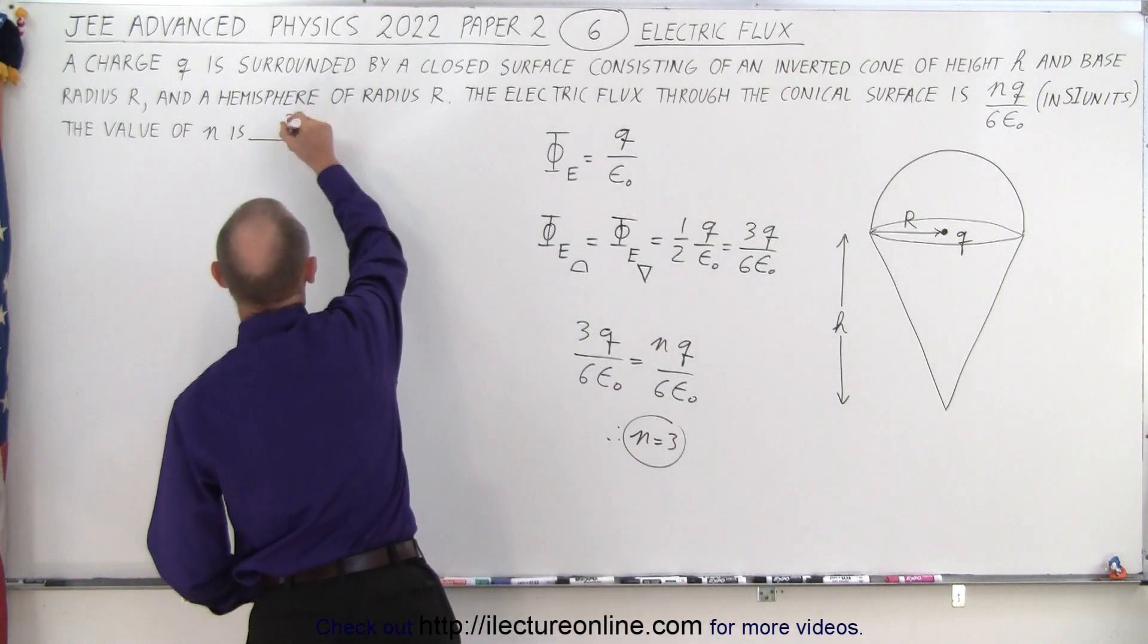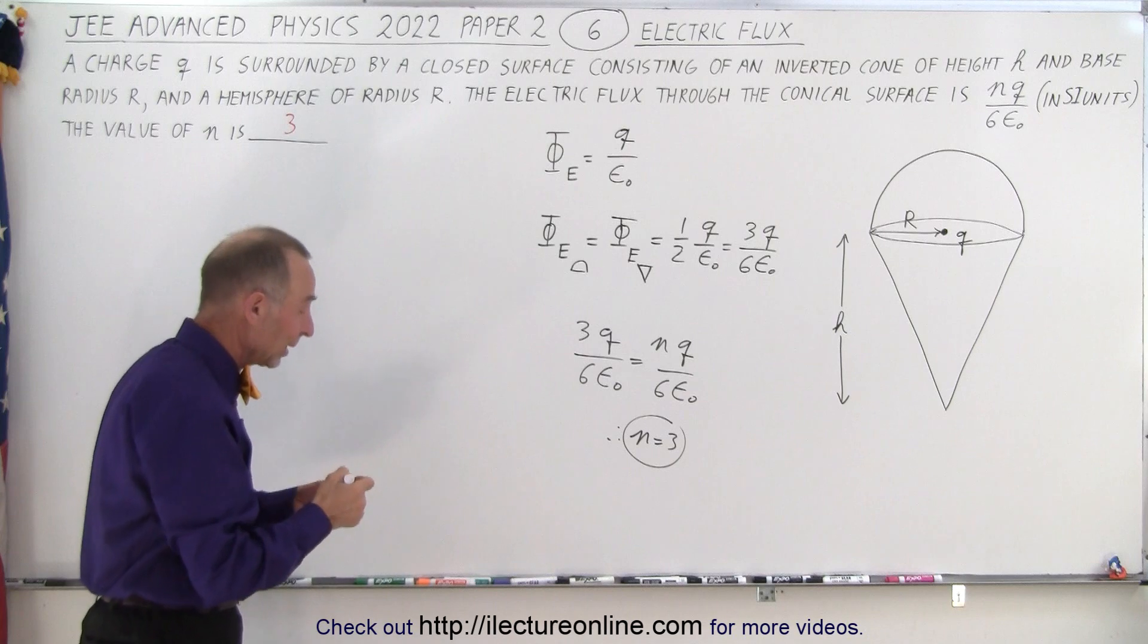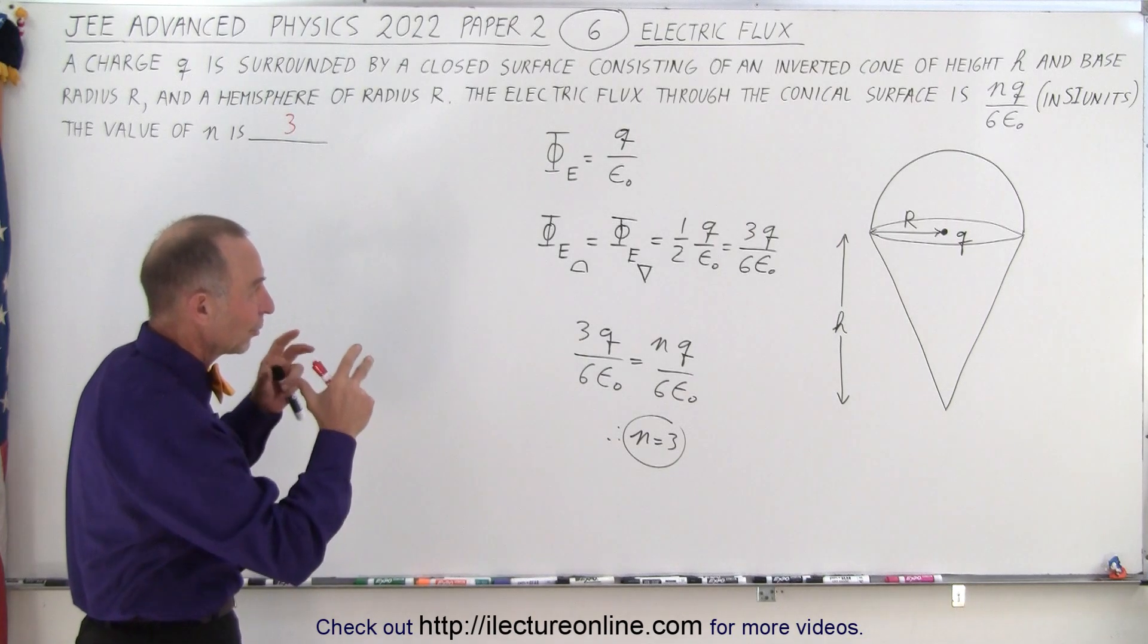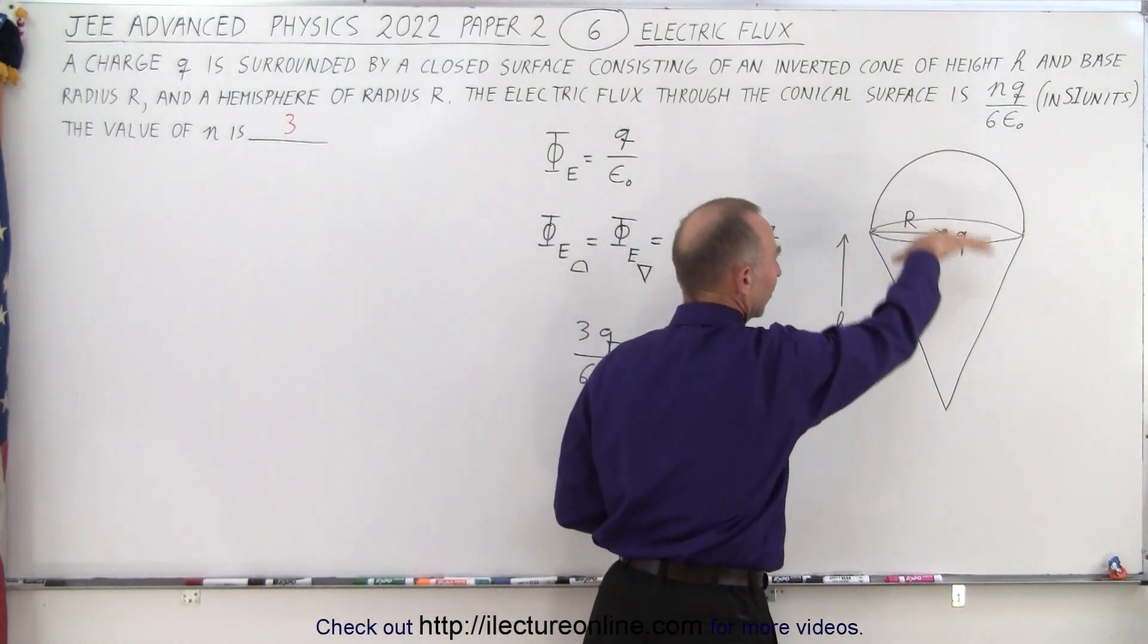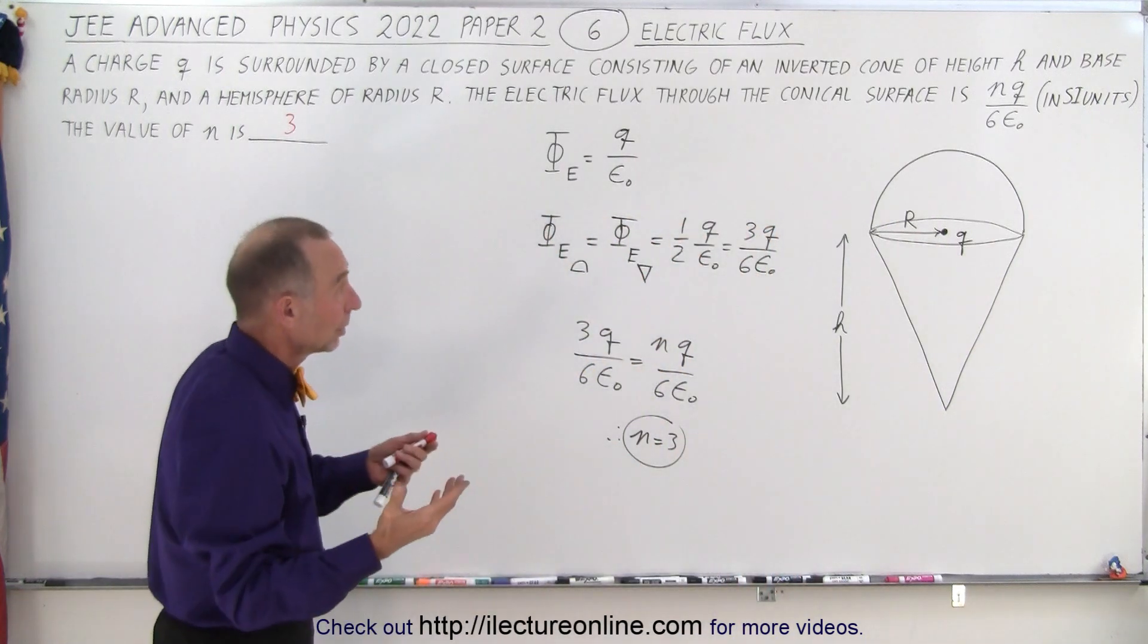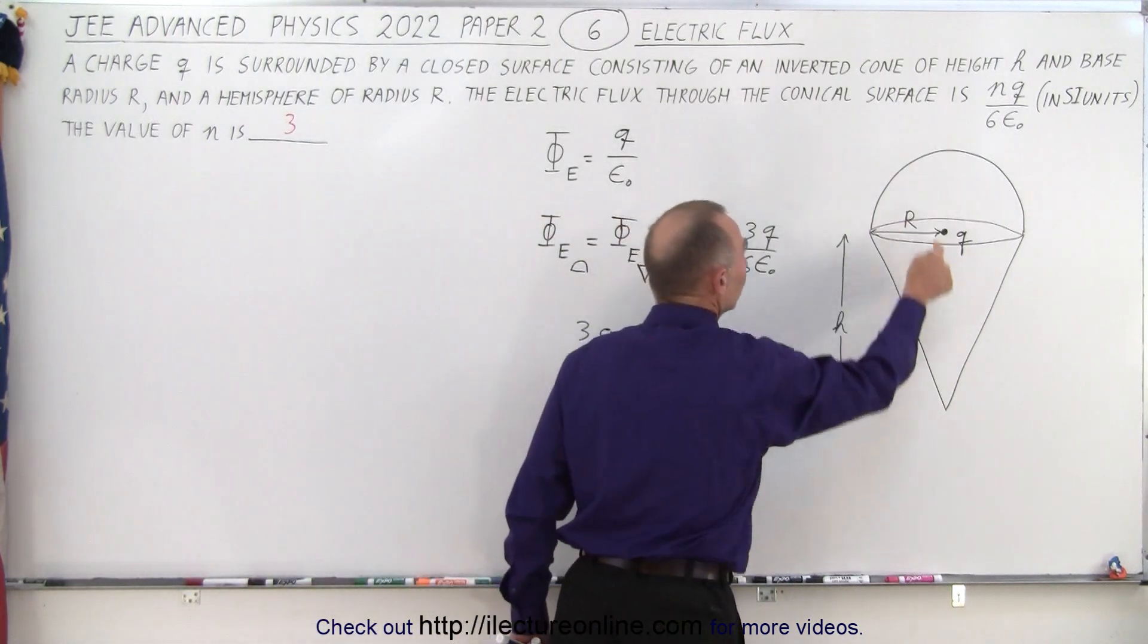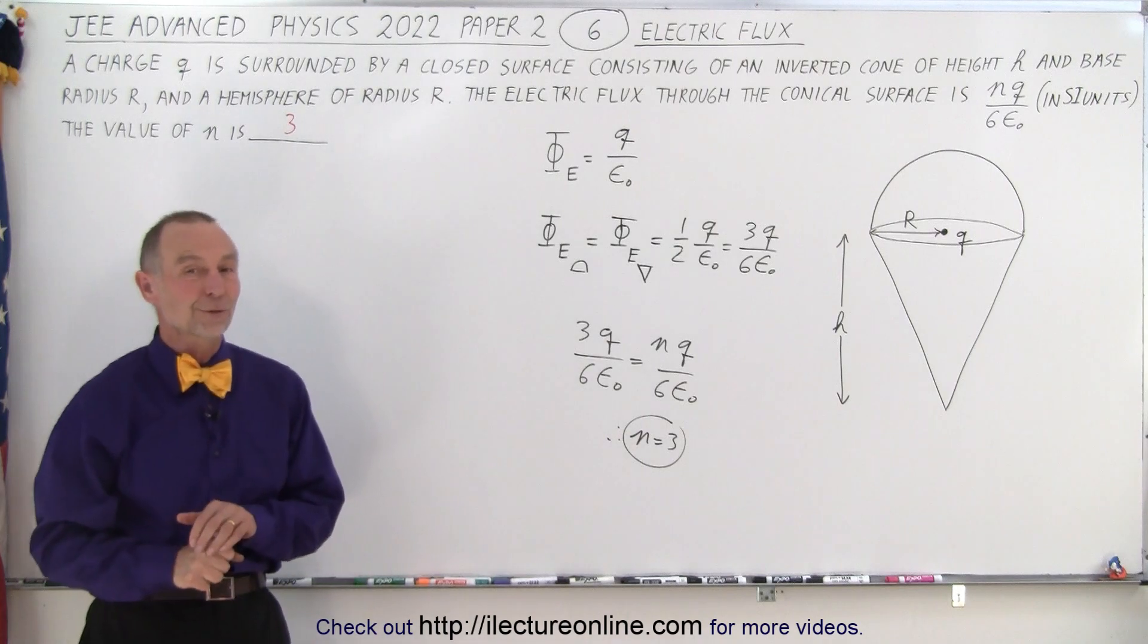Now if I wasn't talking so much and I just quickly ran through that, yes, we could do that in probably 30 seconds. So hopefully you saw that right away. You saw the methodology, you realize that the flux through the hemisphere is the same as the flux through the cone since it's right halfway in between. You realize they're equal, so the total flux is twice the flux to either one of these two surfaces. Therefore, very quickly you can get the result of this problem.